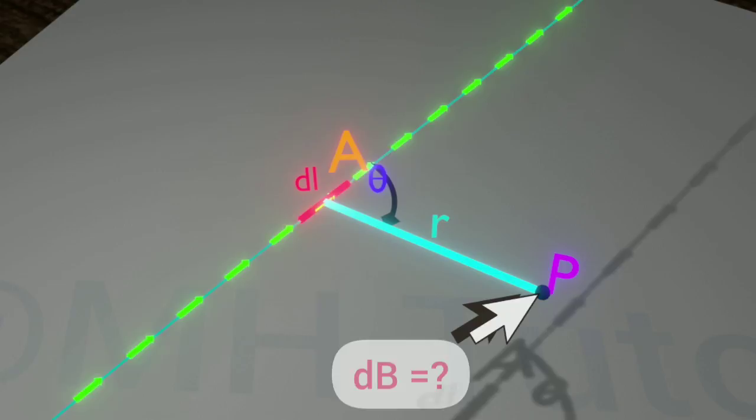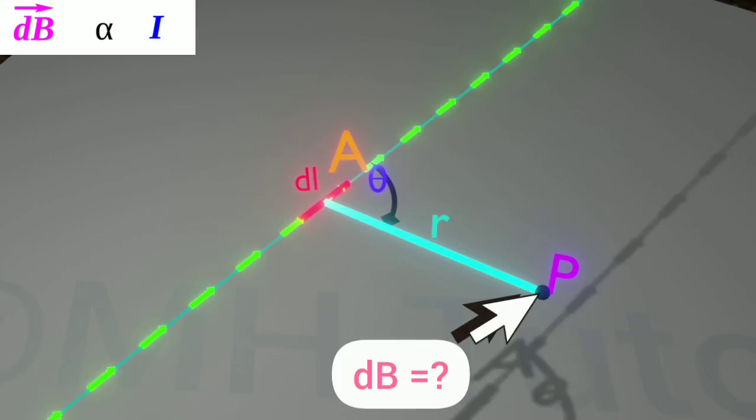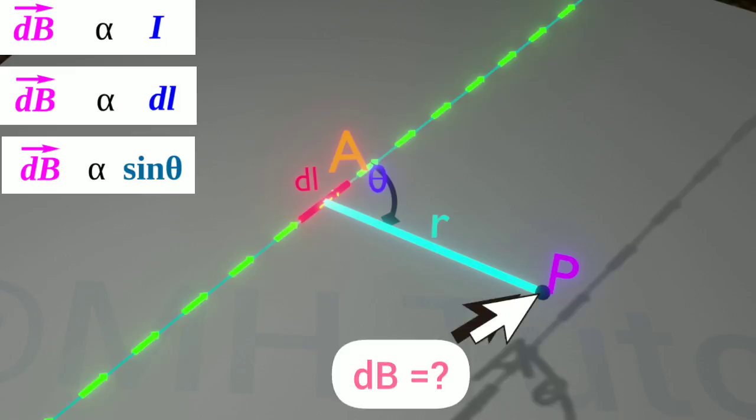If the produced magnetic field at P is dB, then Biot-Savart law says dB is proportional to I, the amount of current flowing through the wire, to the length of the portion of the wire, which is DL, to sine theta, where theta is angle formed by DL and R. R is the distance A P.